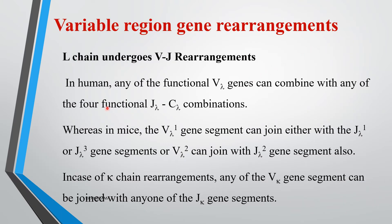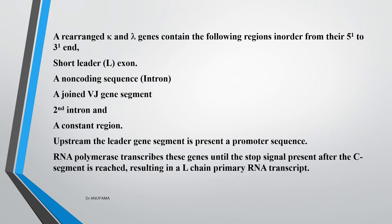For variable region gene rearrangements in the light chain: in humans any of the functional V-lambda genes can combine with any of the four functional J-lambda and C-lambda combinations. In mice V-lambda 1 can join with J-lambda 1 or J-lambda 3, and V-lambda 2 can join with J-lambda 2. For kappa chain rearrangements, any of the V-kappa gene segments can join with any of the J-kappa gene segments. Rearranged kappa and lambda genes contain the following regions from 5' to 3' end.